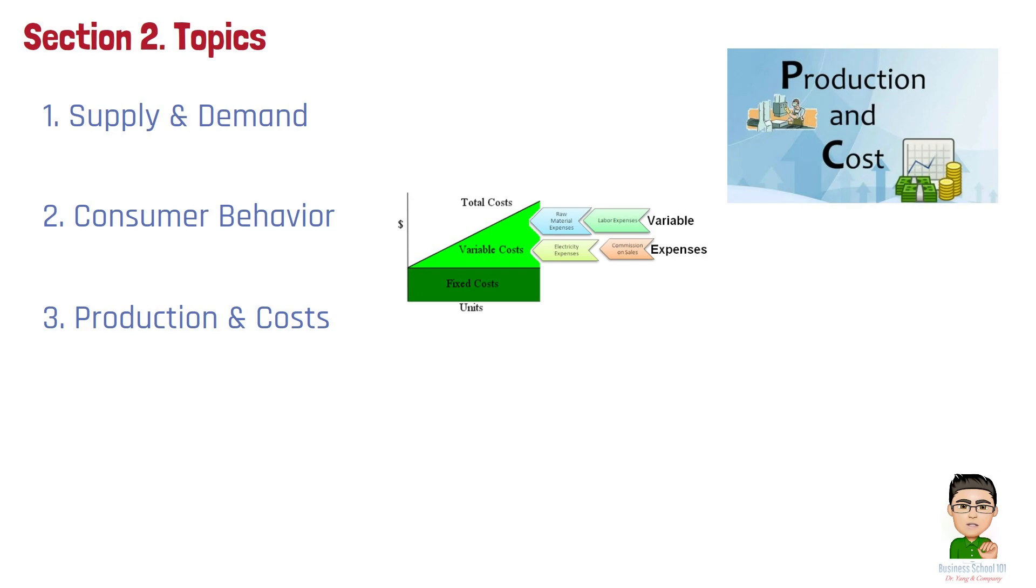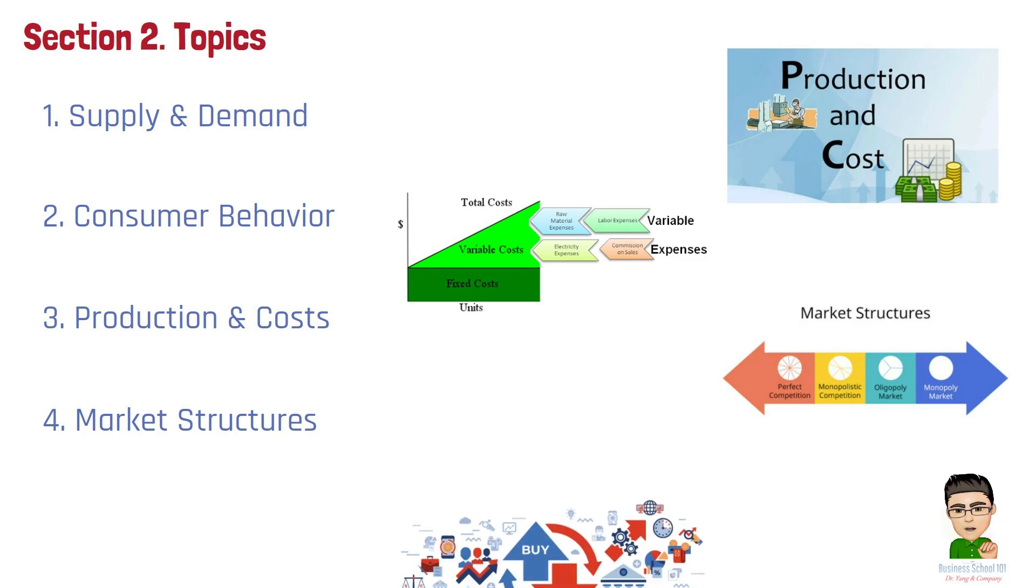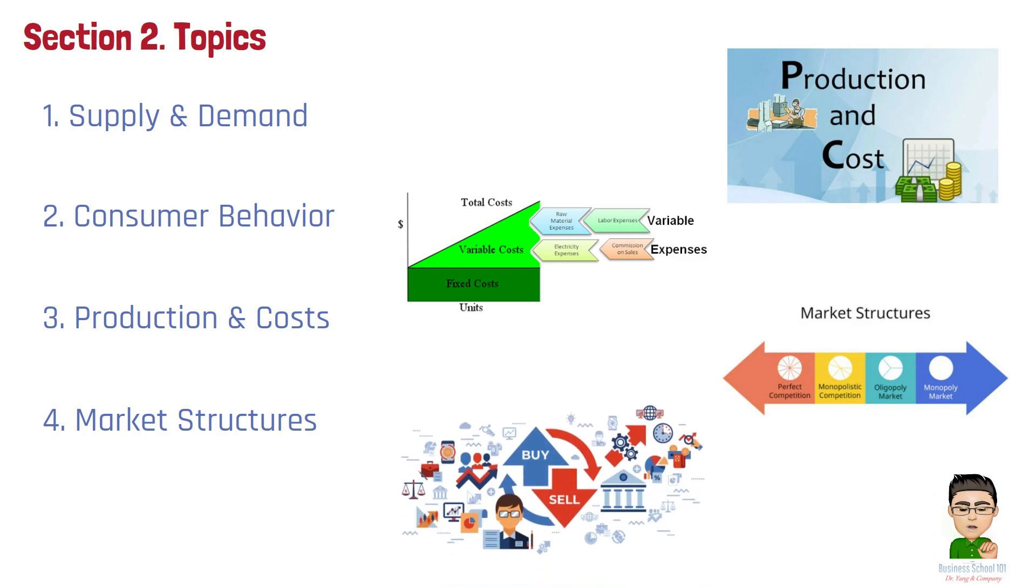Number 4. Market Structures. Market structures describe the organization of markets, ranging from perfect competition with many firms and identical products, to monopoly, where a single firm controls the market. Each structure affects how firms set prices and output, with varying levels of competition influencing consumer choices and market efficiency.